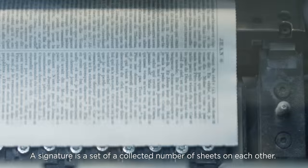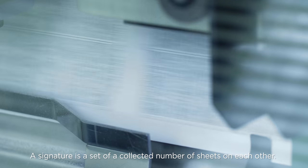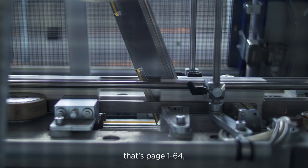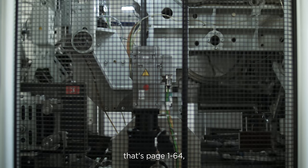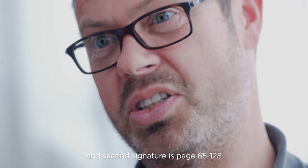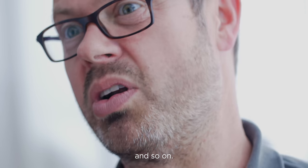The signature is a certain collected number of sheets on each other. One section has 64 pages. That's page 1 till 64. And the second signature is page 65 to page 128, and so on.